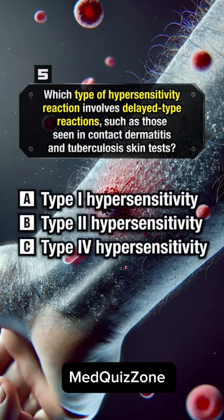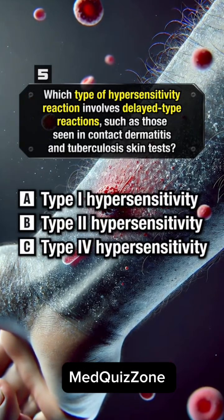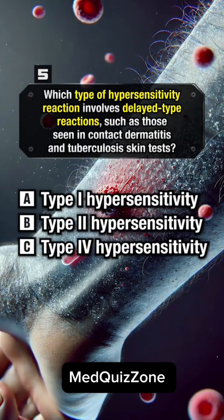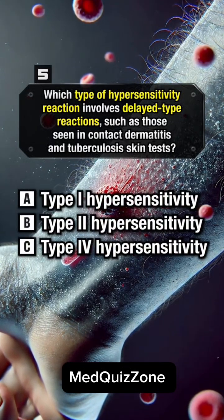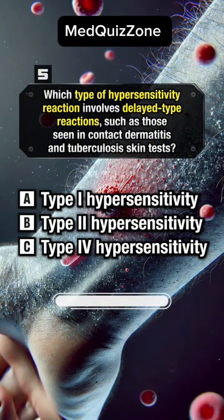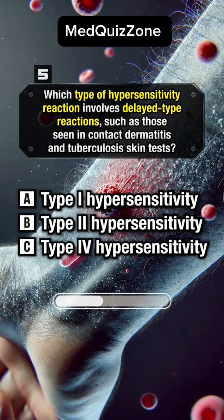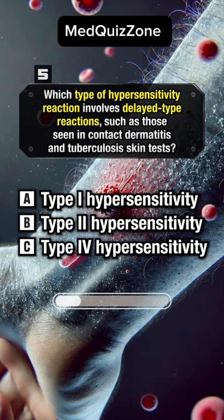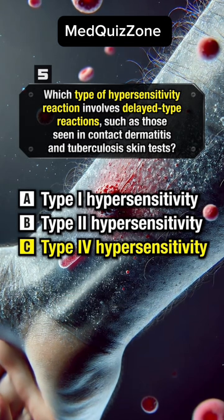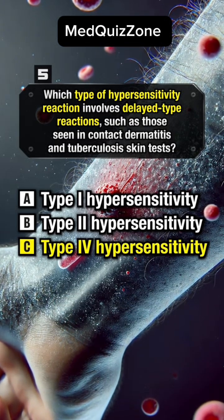Which type of hypersensitivity reaction involves delayed-type reactions, such as those seen in contact dermatitis and tuberculosis skin tests? Answer C: Type IV hypersensitivity.